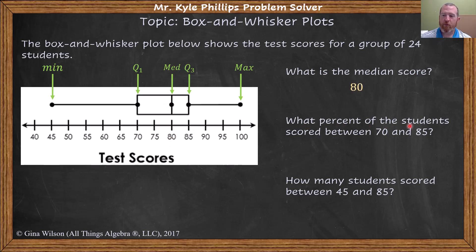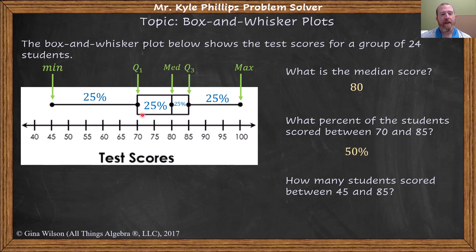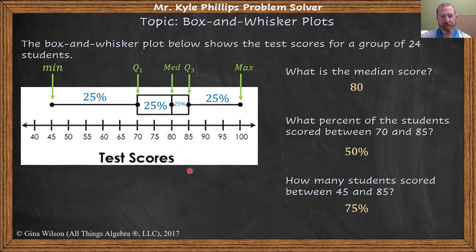What percent of the students scored between 70 and 85? Each section here is 25%. So between 70 and 85 — here's 70, here's 85 — that is 50%. The box is always going to be 50% of your data. How many students scored between 45 and 85? That would be from 45 to 85, so that would be 75% of the data.